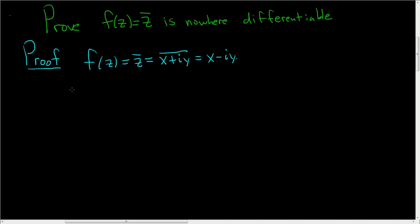All right, so now let's carefully identify u and v. So set u(x,y) equal to x, and v(x,y), this is actually negative y. Got to be careful.